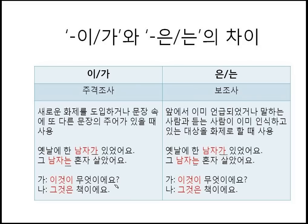이것이 무엇이에요? — This is the first sentence in the dialogue. 이 is used as the subject particle for the newly introduced subject. However, from the second sentence, 은 is used: 그것은 책이에요. Again: 옛날에 한 남자가 있었어요 — 가, first time. 남자는 혼자 살았어요 — 는, second time. 이것이 무엇이에요? — newly introduced. 그것은 책이에요 — 은, second part.